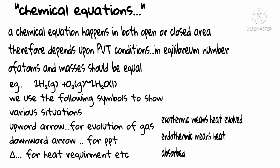A chemical reaction happens in both open and closed regions. Therefore, depends on PVT conditions. In equilibrium, number of atoms and number of masses should be equal. For example, 2H2 plus O2 give rise to 2H2O.